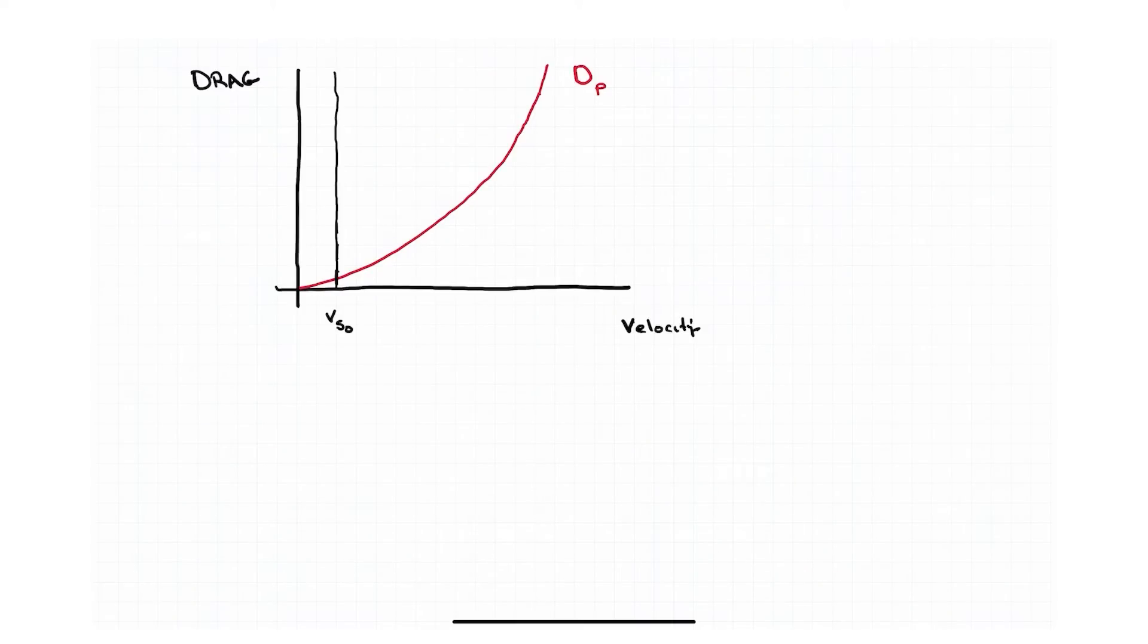So now induced drag gets less and less as the angle of attack decreases. Let's take a look at this real quick and review where we're at already. So parasite drag: the faster I go, the more the parasite drag. We see that.